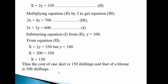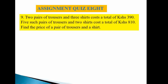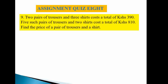Question eight assignment: Two pairs of trousers and three shirts cost a total of 390 shillings, and three pairs of trousers and two shirts cost a total of 810 shillings. Find the price of a pair of trousers and a shirt.